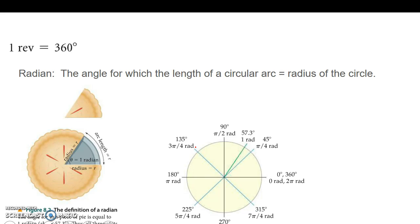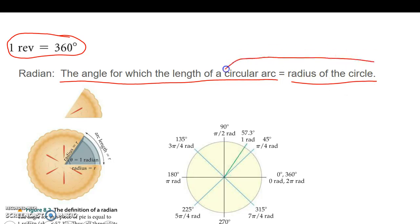In a circle, one complete revolution is 360 degrees. The term radian is the angle for which the length of the circular arc equals the radius of the circle. This is the math definition. For example, say we have a piece of pie, and this angle is one radian in size.